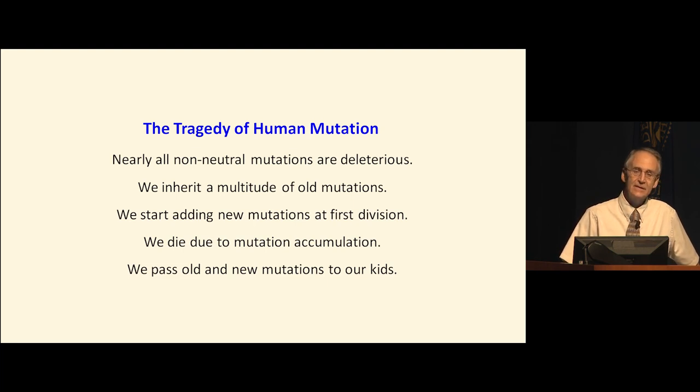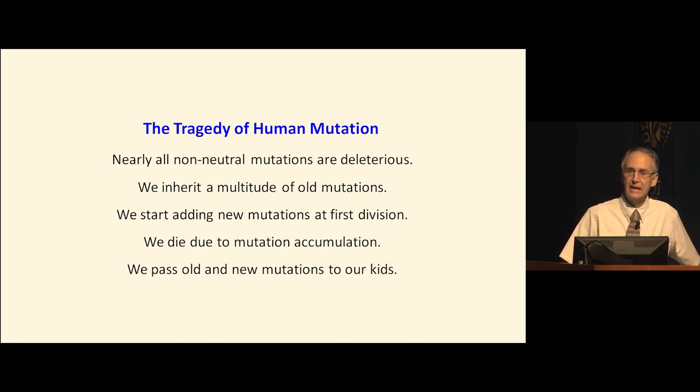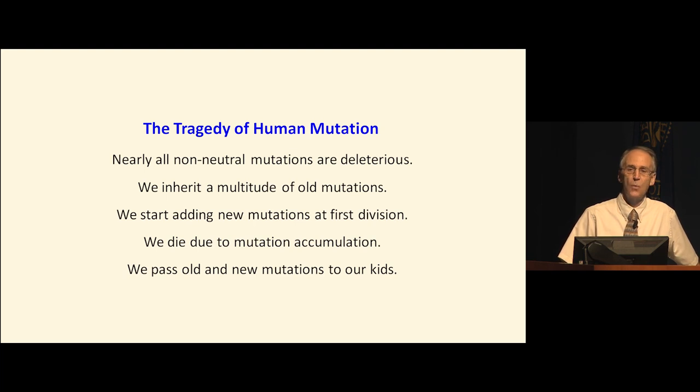Tragically, that's not the end of it because we pass on the mutations we inherited and the new mutations that we've generated to our children. Children should be more mutant than their parents consistently, which is why genetic load tends to accumulate continuously over time. It's now widely understood that the human mutation rate is approximately 100 mutations per person per generation. Our children have about 100 more mutations than we have, and our grandchildren will have about 100 more mutations than they have.